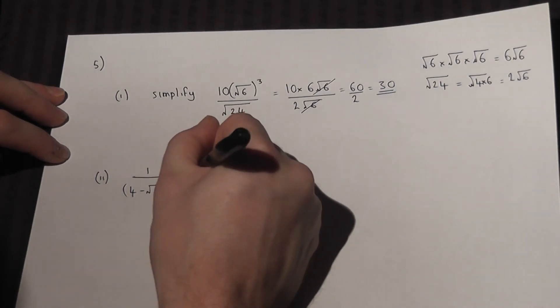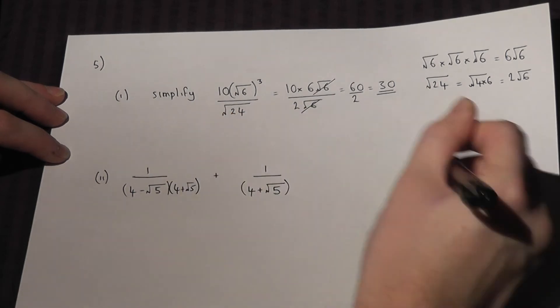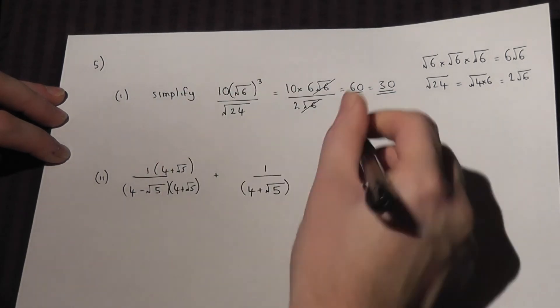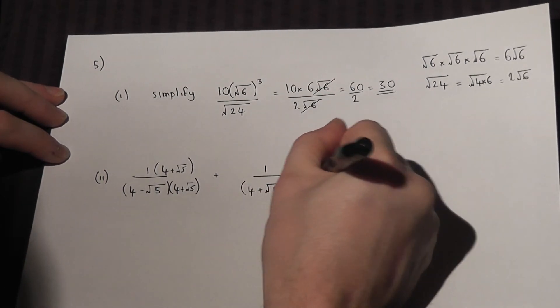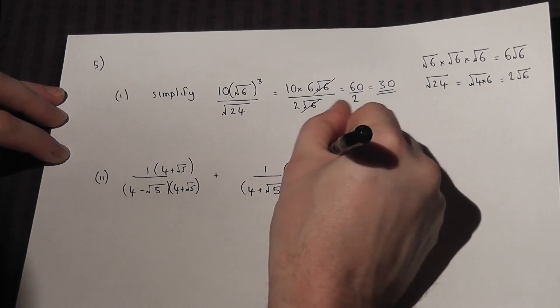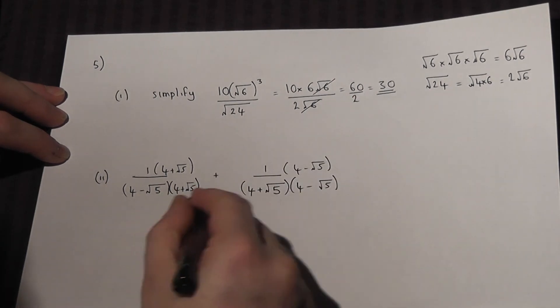So this fraction requires a 4 plus root 5, which I've put at the bottom, and must therefore do the same on the top. This one requires a 4 minus root 5, and must therefore do the same on the top. They now share the same denominator.